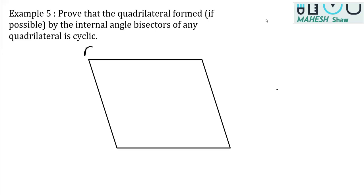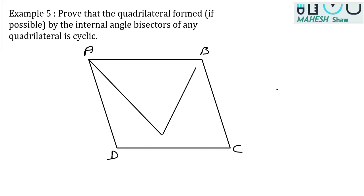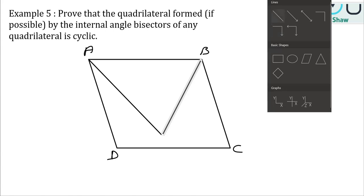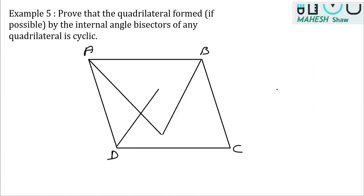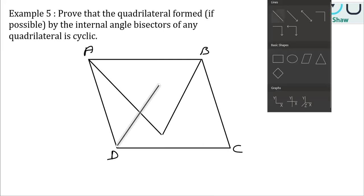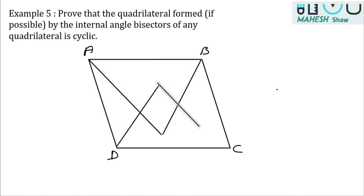Let's name this quadrilateral as ABCD. We have to draw the internal angle bisectors — the bisector of angle A, the bisector of angle B, the bisector of angle D, and the bisector of angle C — forming a new quadrilateral inside.